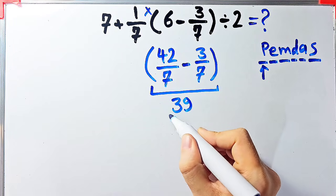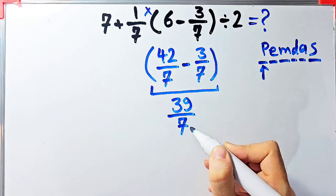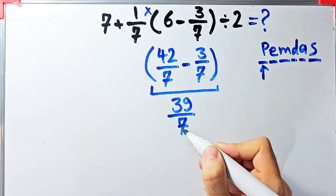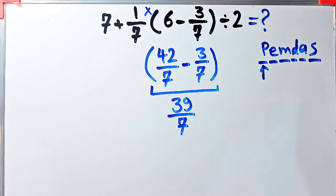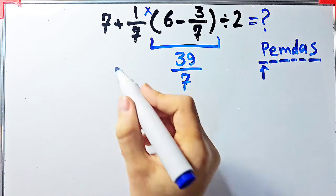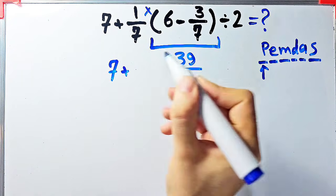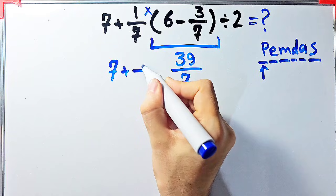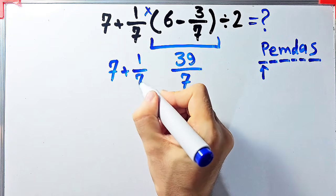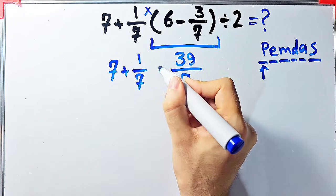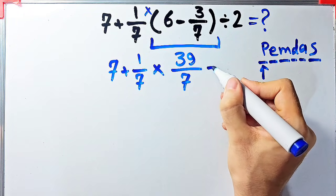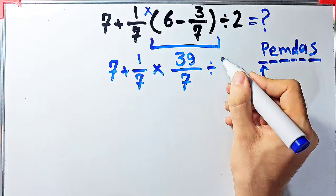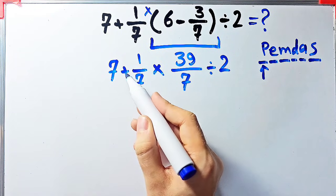Now we have: seven plus one over seven, then times thirty-nine over seven, divided by two. Now we have addition, multiplication, and division.